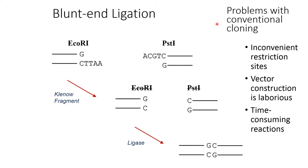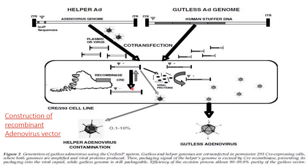The problem with conventional cloning is inconvenient restriction sites and that vector construction is laborious and time-consuming. To generate a gutless adenovirus, we require a helper adenovirus genome and a gutless adenovirus genome.